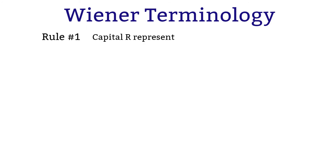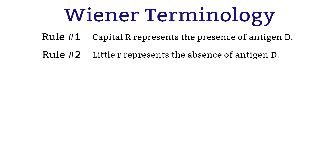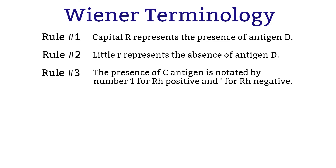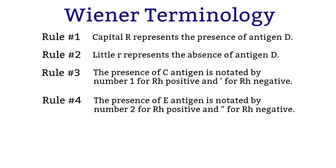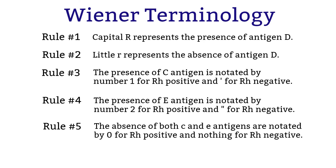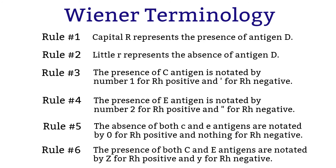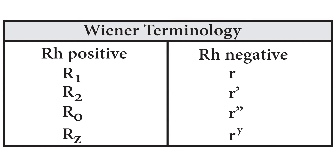Next is Wiener terminology. Rule number one: use capital R to represent the presence of D antigen. Rule number two: little r is used to represent the absence of D antigen. Rule number three: C antigen is noted by number one in RH positive or a prime in RH negative. Rule number four: E antigen is noted by number two in RH positive and double prime in RH negative. Rule number five: the absence of both C and E antigens are noted by zero in RH positive and nothing for RH negative. Rule number six: the presence of both C and E antigen are noted by Z for RH positive and Y for RH negative. Here is the table you can refer back to at any time.